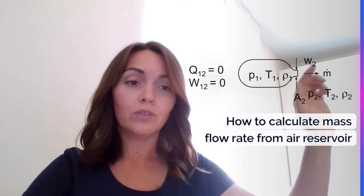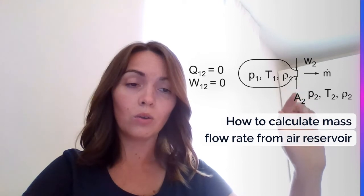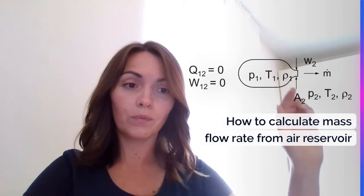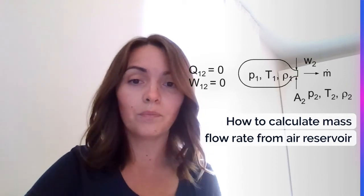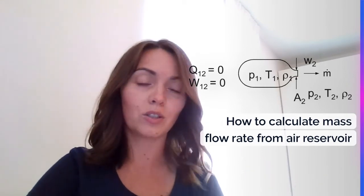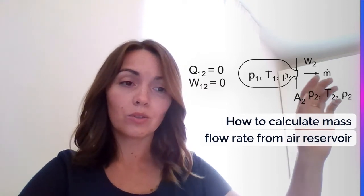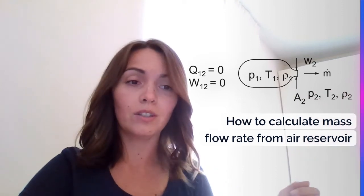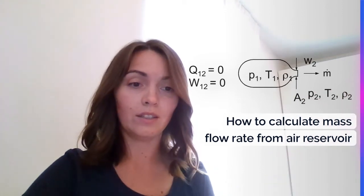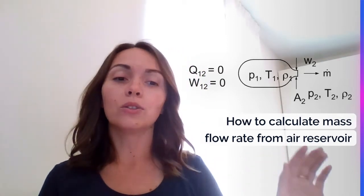The air goes out of the air reservoir with a certain mass flow rate through the hole that has the surface A that actually depends on the diameter, so it's π times d squared divided by 4. I have a mass flow rate and the air goes with a certain pressure also out - it's an outlet pressure in this case, temperature and density. Our question is now how we calculate mass flow rate from this air reservoir.